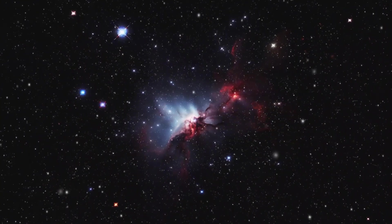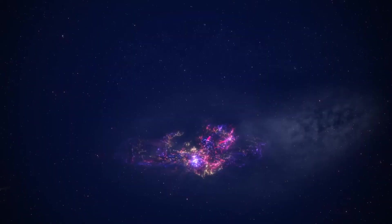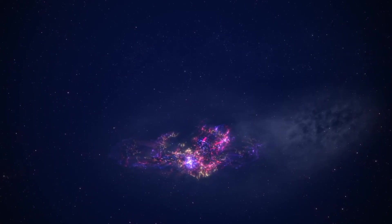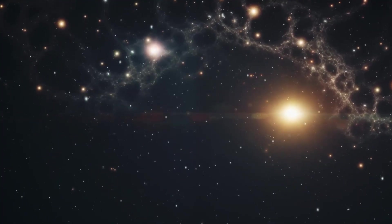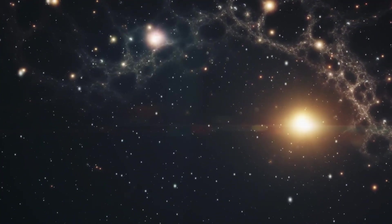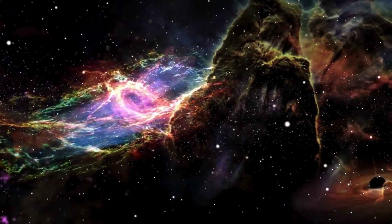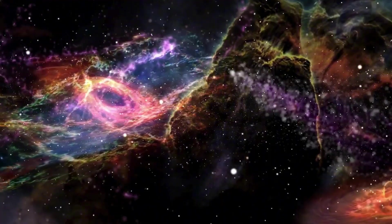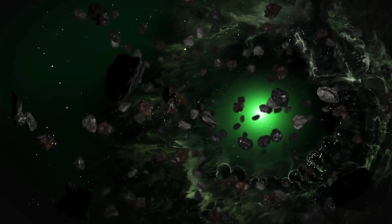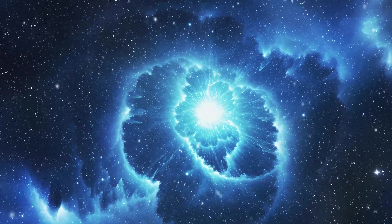One of the most outstanding features is the Sputnik Planitia, an immense heart-shaped plain that is primarily made up of nitrogen ice. This region showcases a diverse array of landforms, including large ice shelves and what appear to be flowing glaciers. The presence of these features suggests that Pluto may still be geologically active despite its great distance from the sun and low temperatures. Another intriguing aspect of Pluto is its atmosphere, primarily composed of nitrogen with traces of methane and carbon monoxide. Pluto's atmosphere is thin, yet it exhibits fascinating seasonal variations. As Pluto approaches the sun in its elongated orbit, its atmosphere can expand and contract.